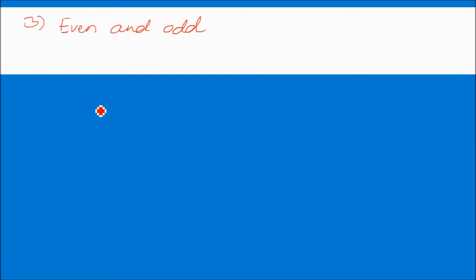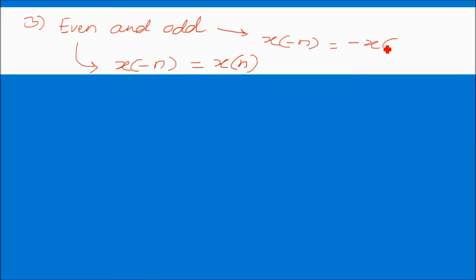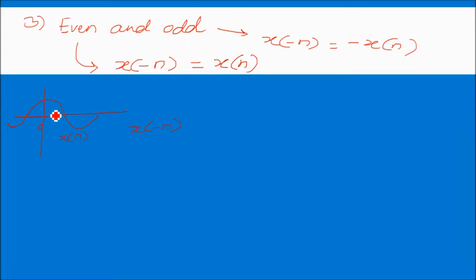The third type is even and odd signals. A signal is called even if x(−n) = x(n). For example, the cosine signal: if you fold it, x(−n) gives the same output as x(n), so the cosine wave is an even signal.